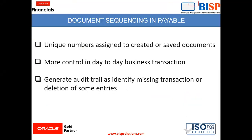Document sequencing is a unique number assigned to created or saved documents. It provides more control in day-to-day business transactions by generating an audit trail, identifying missing transactions or deletion of some entries. It gives the proof of completeness.